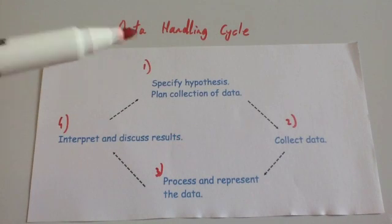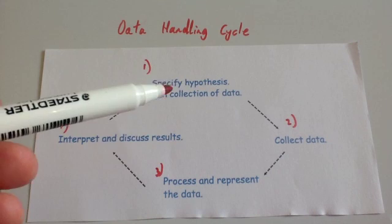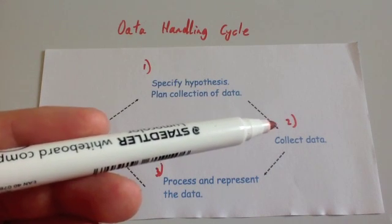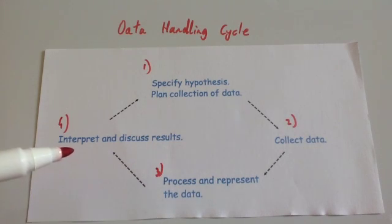So this is the data handling cycle. It's stating your hypothesis and planning what you're going to do in your investigation. Step two, collect the data. Step three, to then process it and to draw graphs with the data. And step four is then to interpret and discuss your results. And if needs be, repeat the whole thing.